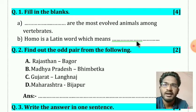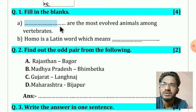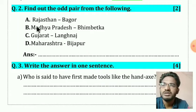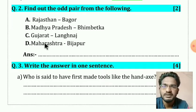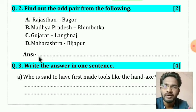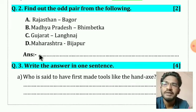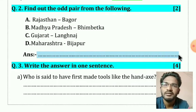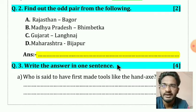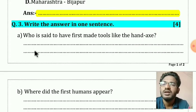You are going to underline your answers like this. Question number two: find out the odd pair from the following, for two marks. Three pairs are given — Rajasthan/Bagor, Madhya Pradesh/Bhimbetka, Gujarat/Langnaj, Maharashtra/Bijapur. One of these pairs is wrong; that odd pair you have to find out and write the answer in the highlighted place.